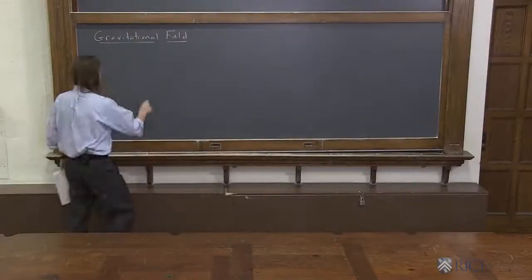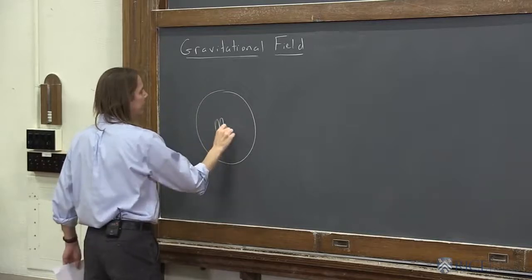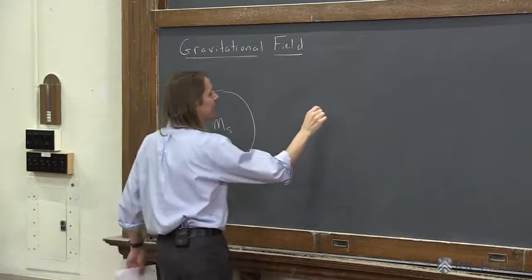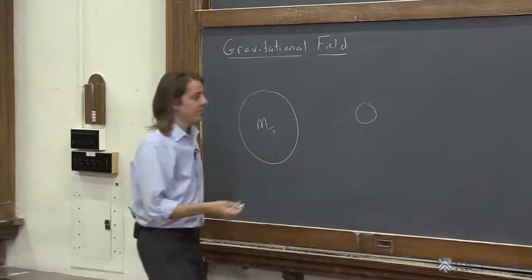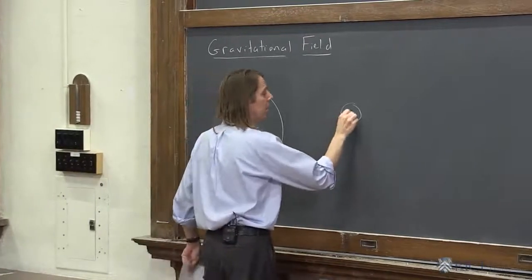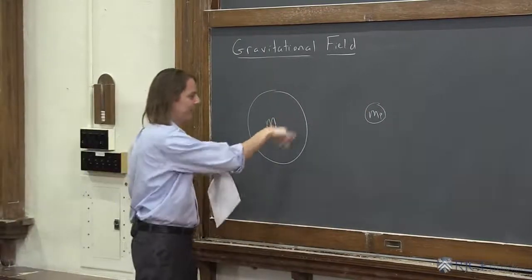So Newton came up with this way to describe gravitation in terms of the mass of the sun here and a planet out here. A way to describe that force, GMm over r squared, and how that force is the same as the force we feel on the surface. That was all wonderful,